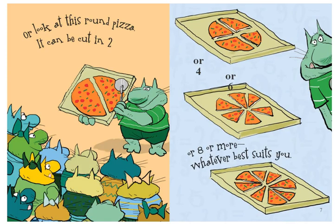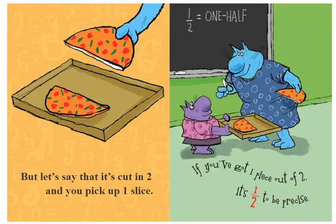Or look at this round pizza. It can be cut in two, or four, or six, or eight or more — whatever best suits you. But let's say that it's cut in two and you pick up one slice. If you've got one piece out of two, it's one half to be precise.